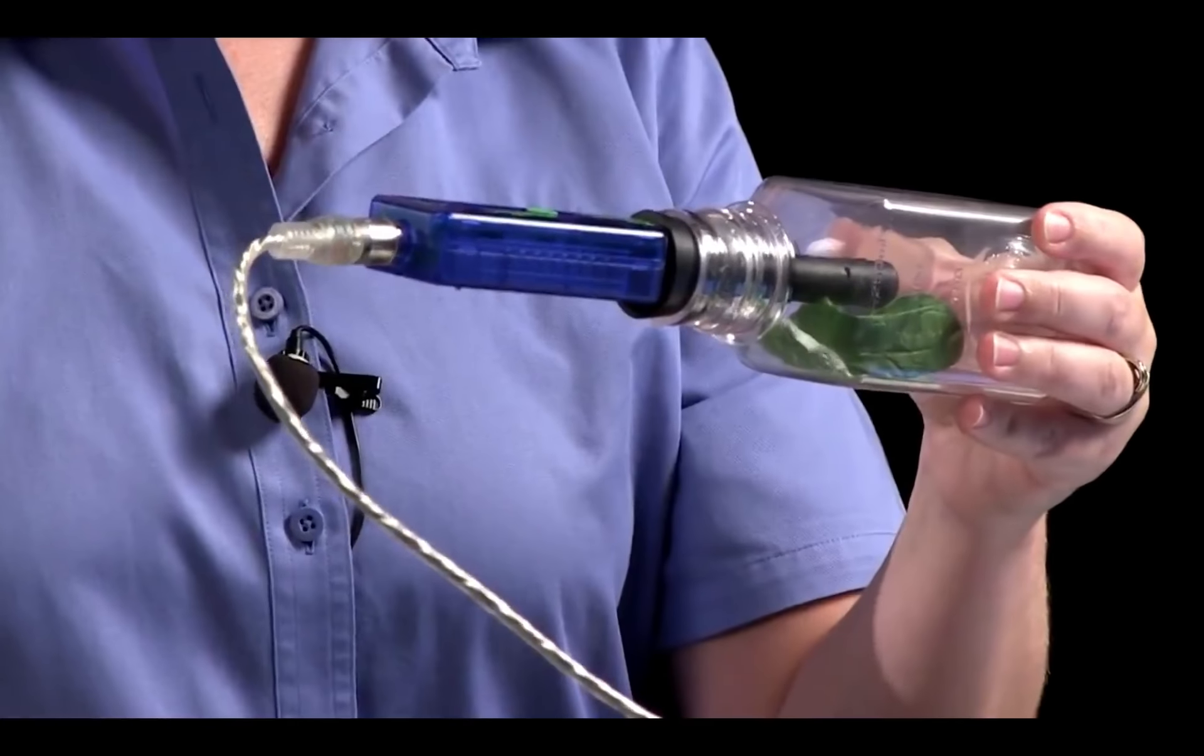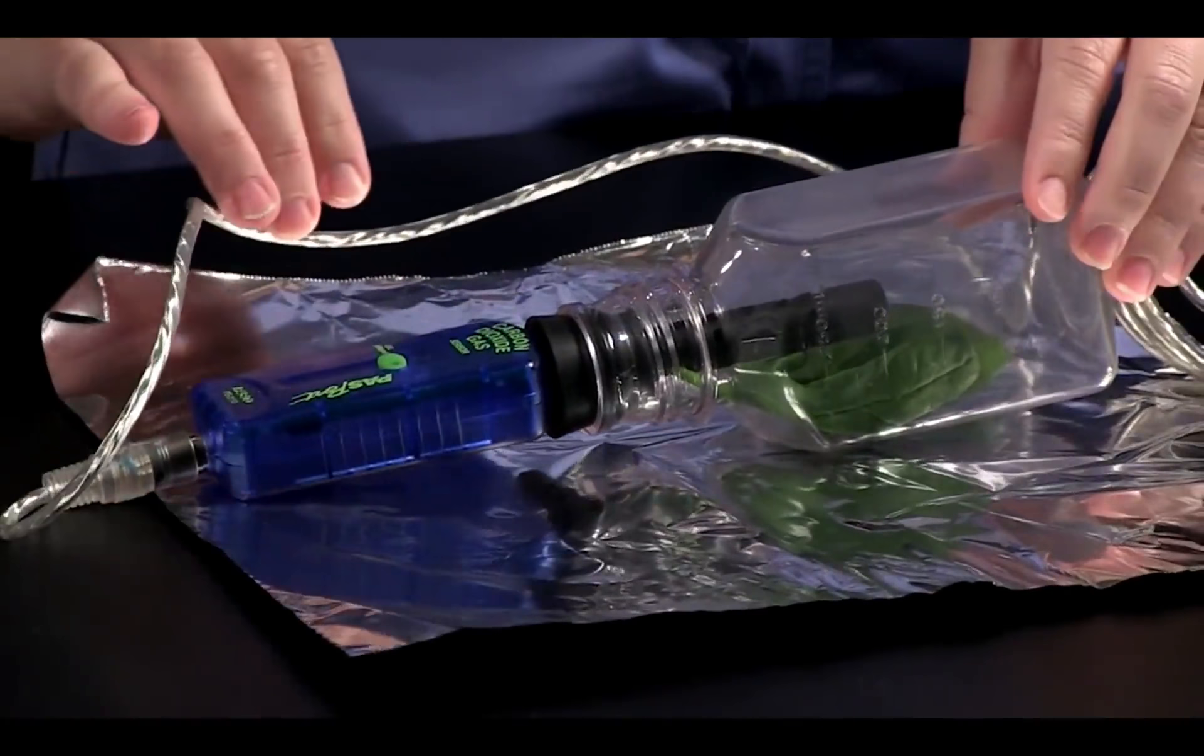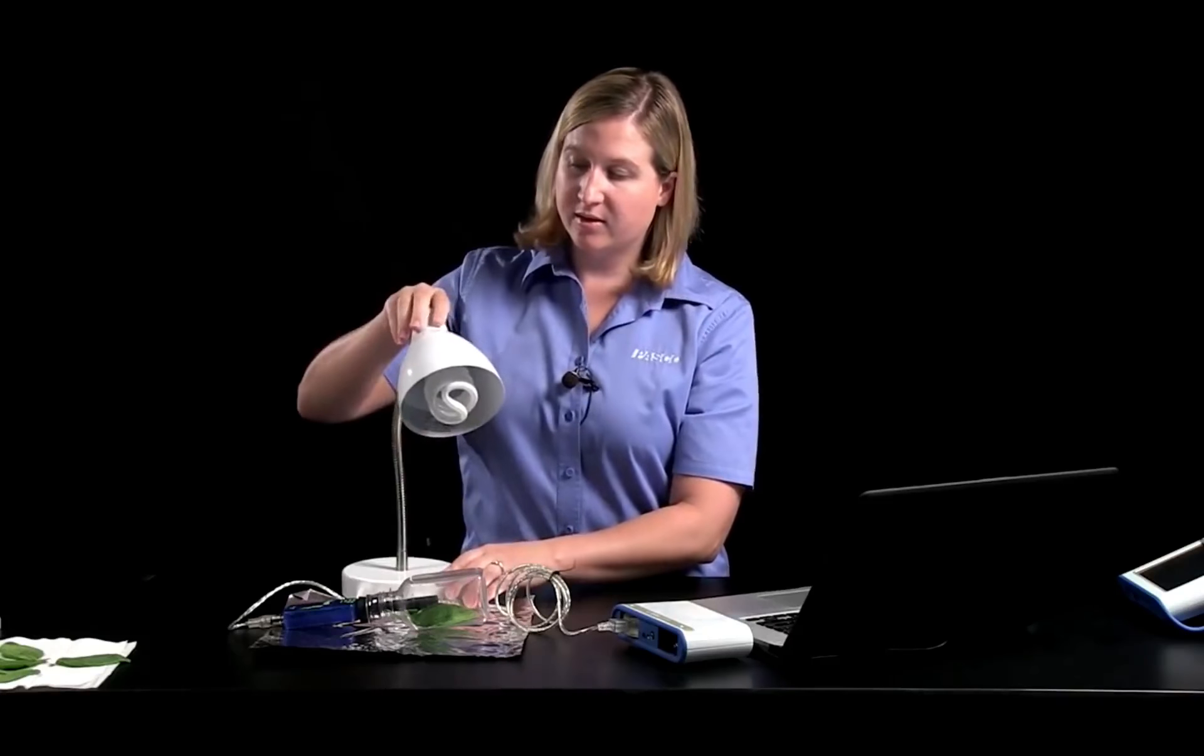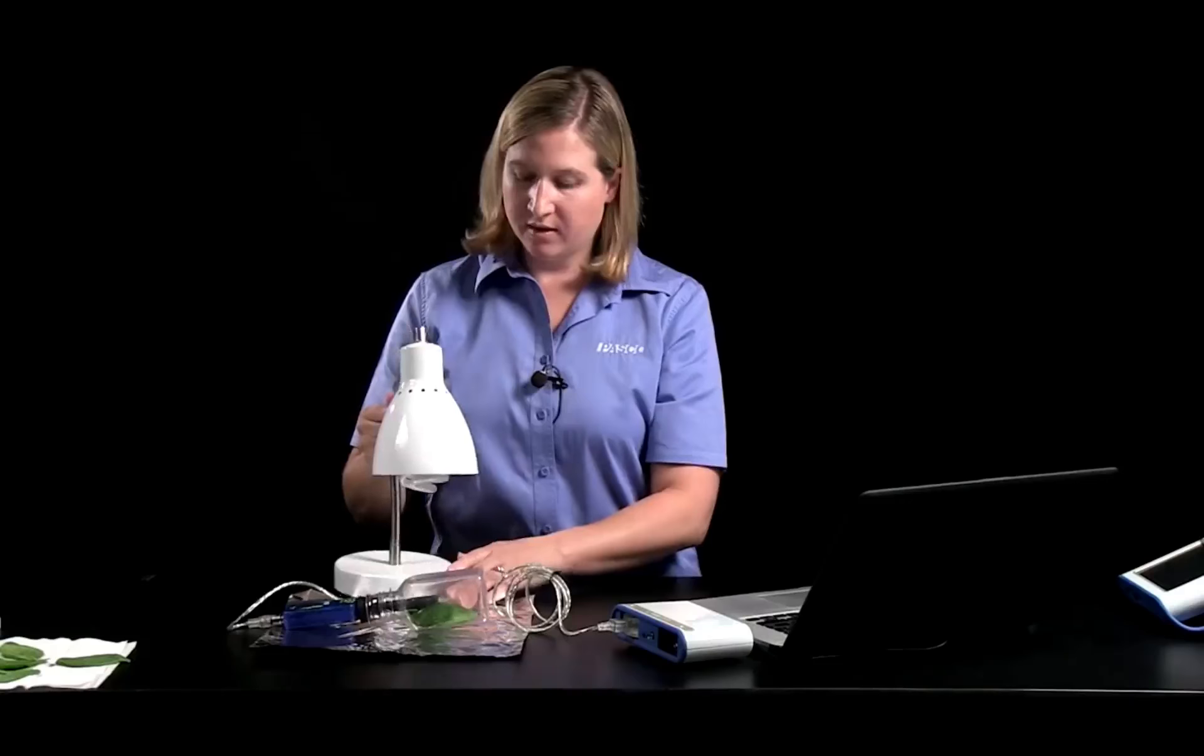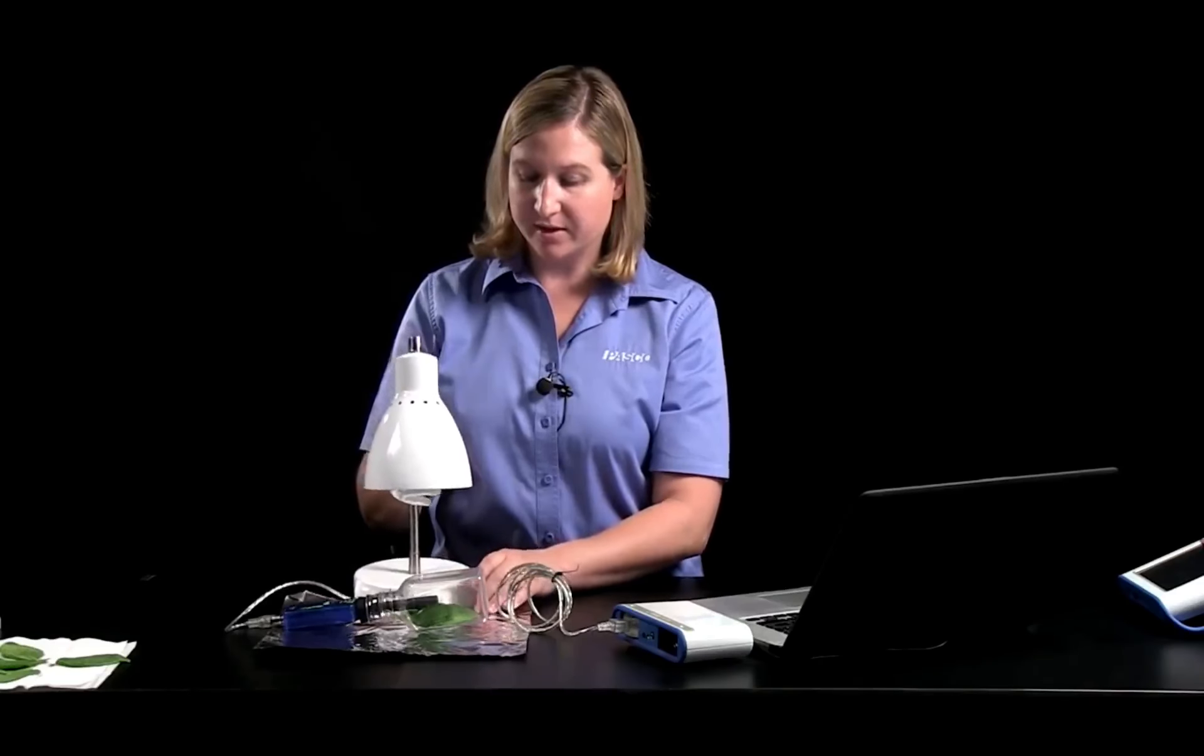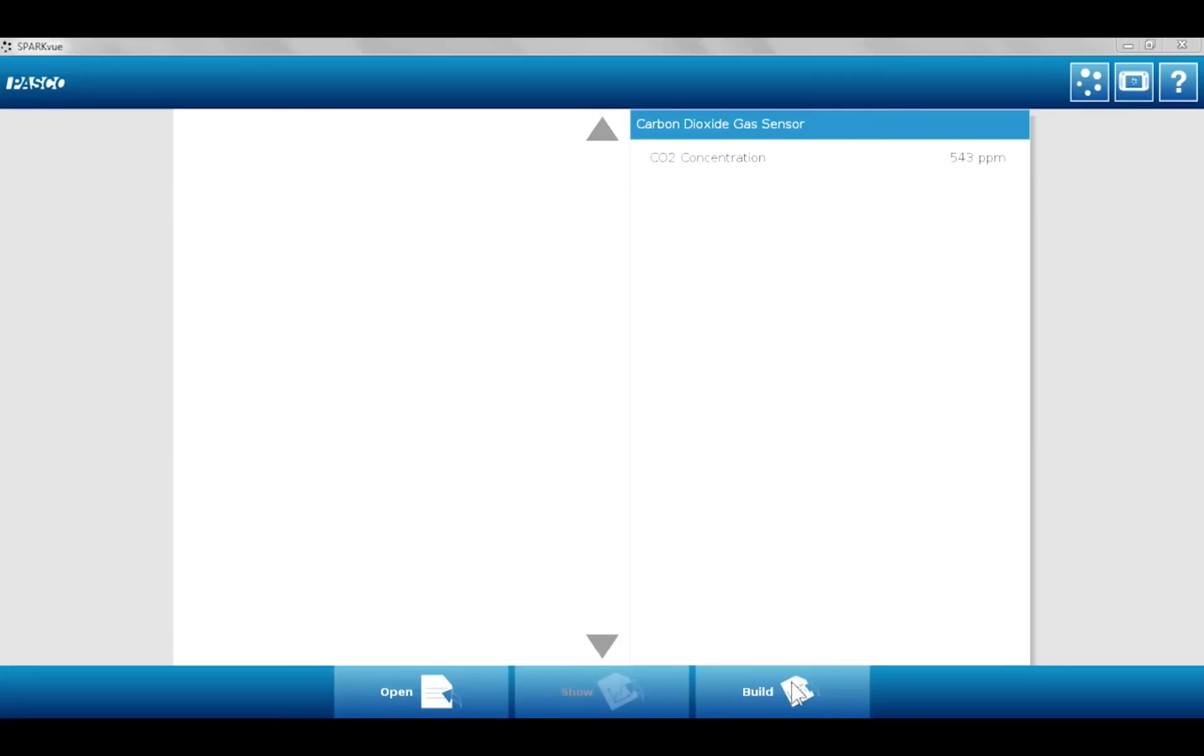I'm going to take a square of aluminum foil. Plug my sampling bottle with the spinach leaves inside with the carbon dioxide sensor. I'm going to place the sensor and the bottle flat on top of the piece of foil. Then I'll arrange my light. I've put into the desk lamp here a compact fluorescent light bulb, and I'll adjust the light so it will shine directly on the leaves within the sampling bottle.